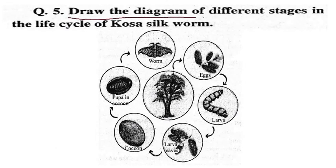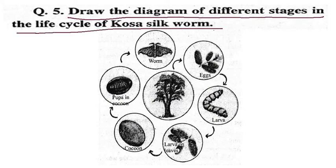Draw the diagram of different stages in the life cycle of the posa silkworm. The life cycle begins with the egg, then the larva which feeds on leaves, then the larva forms a cocoon, and after that it becomes a butterfly.